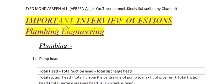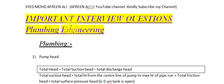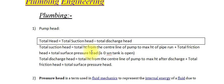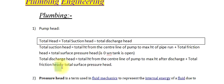Plumbing Engineering Questions. Question 1: Pump Head. Total head equals total suction head plus total discharge head. Total suction head equals total height from the centerline of the pump to max height of pipe run, plus total friction head, plus total surface pressure head — is zero when the tank is open. Total discharge head equals total height from the centerline of the pump to max height after discharge, plus total friction head, plus total surface pressure head.